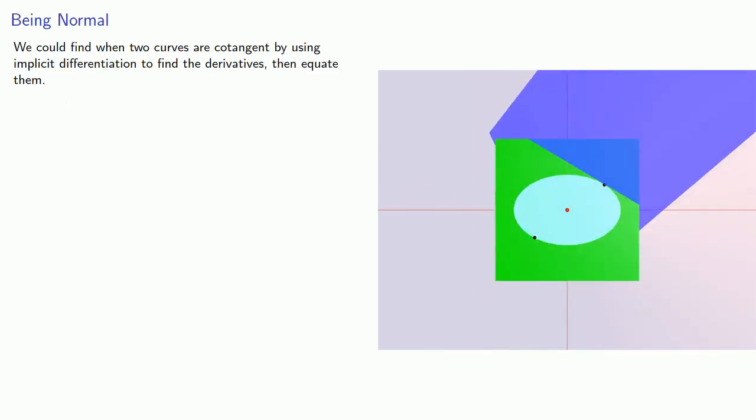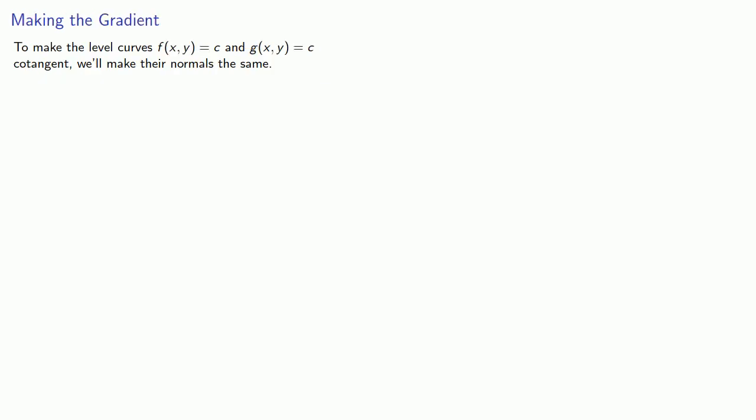Now we could find when two curves are cotangent by using implicit differentiation to find the derivatives, then equate them. But if they're cotangent, their normals are the same and we can find the normal vector using the gradient. And so this suggests the following approach. To make the level curves f of xy equals c and g of xy equals c cotangent, we'll make their normals the same.